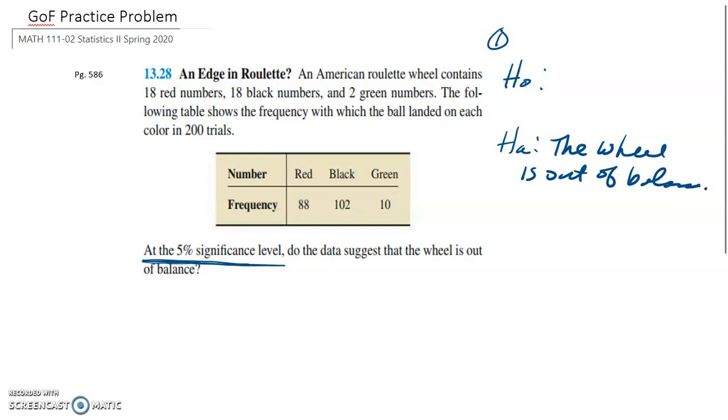Your alternative hypothesis is we are checking to see that the wheel is out of balance. When we talked about goodness of fit, what this means, if it's out of balance, then the distribution of these observed values will not fit what we expect to happen. So of course, the null hypothesis, we go into this problem with the understanding, with the assumption that this wheel is balanced. So our null could be the wheel is balanced.